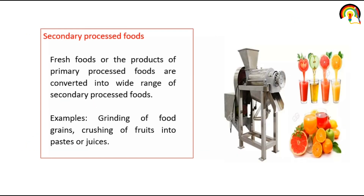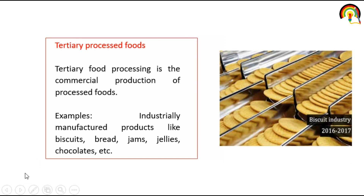Next is secondary processed food. Fresh food or the products of primary processed food are converted into a wide range of secondary processed food. For example, grinding of food grain, or crushing of fruit into paste or juice — that is secondary processed food. Next is tertiary processed food, which is the commercial production of processed food. For example, industrially manufactured products like biscuit, bread, jam, jelly, chocolate, etc.